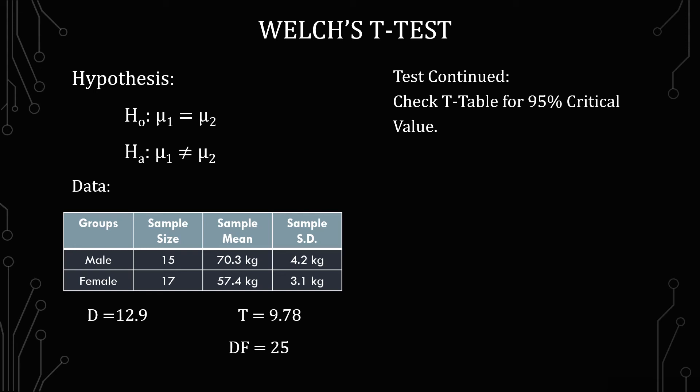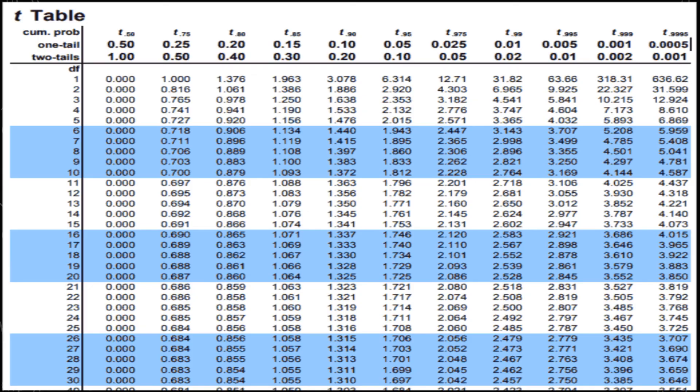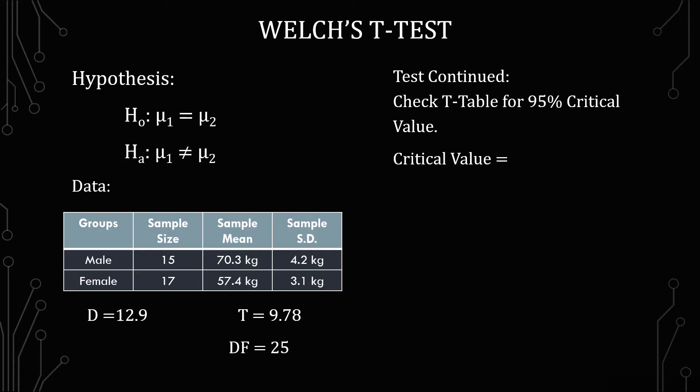And that we're looking for degrees of freedom of 25. From the table we get a 2.060 for the critical value.